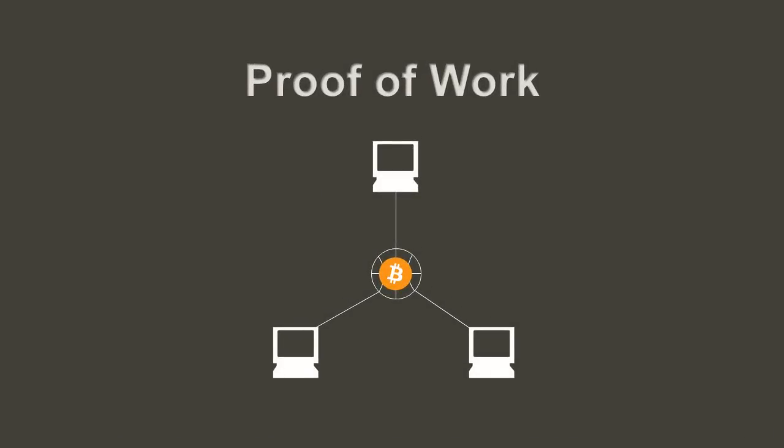Bitcoin, and many other coins, use proof of work to determine who gets the right to record transactions. Basically, computers on a network work as fast as they can to get the answer to a complicated math problem. The computer that solves the problem first gets to record the transaction and receives the rewards. Proof of work is kind of like a race — the first to the finish line wins. When a new block is found, the race starts all over again. If you want to win, you need the fastest computer.